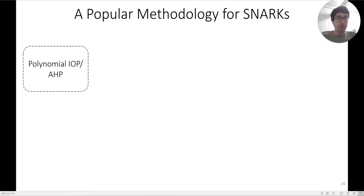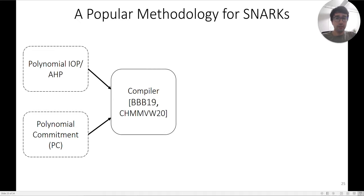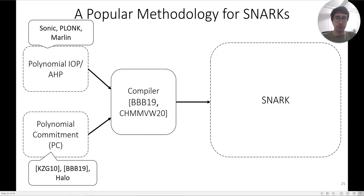The answer comes from a very popular methodology for building SNARKs: you start with an information-theoretic proof system called a polynomial IOP or AHP, add a polynomial commitment scheme, and combine them using a compiler to get a SNARK. Examples of this include Sonic, Plonk, and Marlin; polynomial commitment schemes include KZG, BBBF, and Halo.